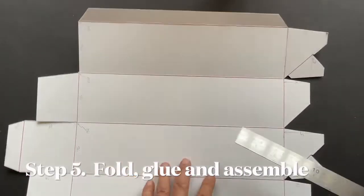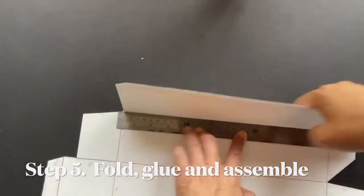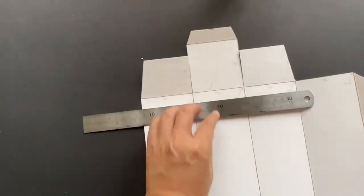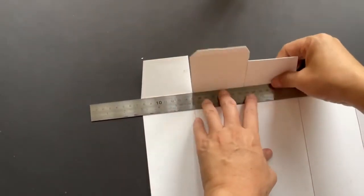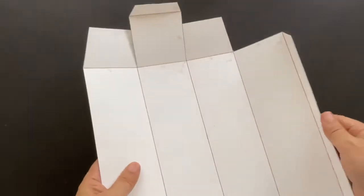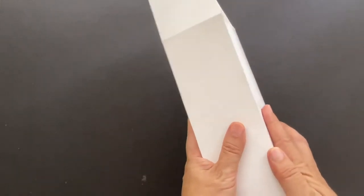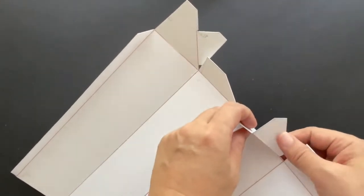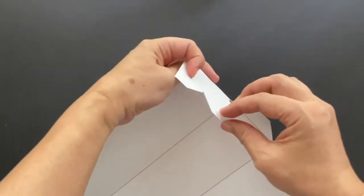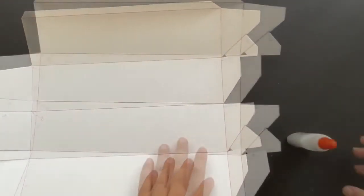Fold the score lines with a metal ruler one more time. Make sure these two 45 degree tapered flaps are folded as well. Now we're ready to glue them up and assemble.